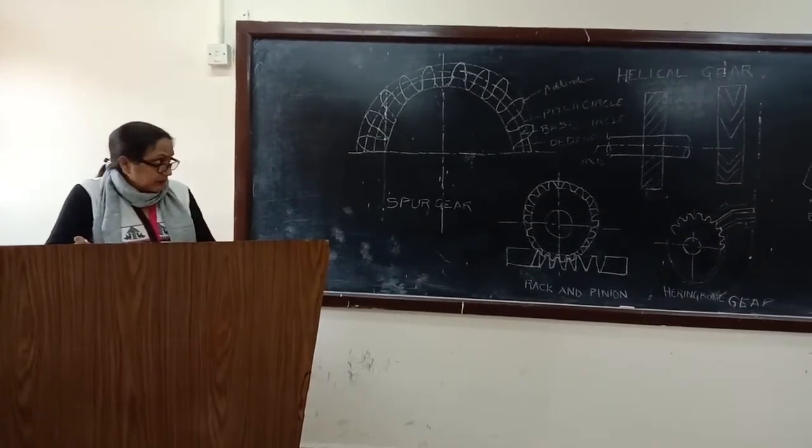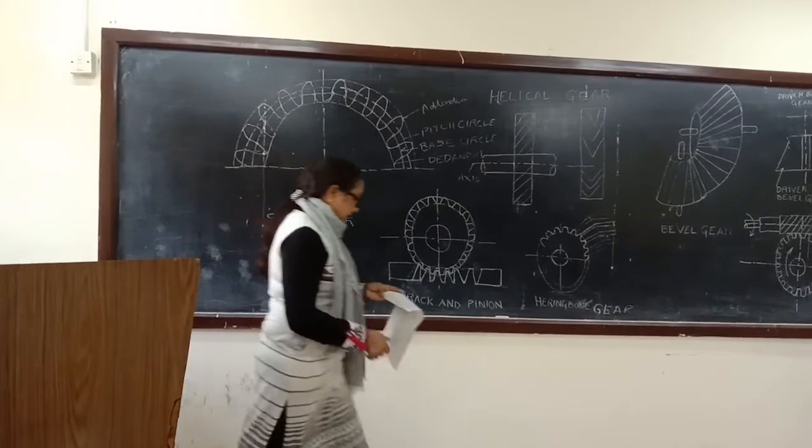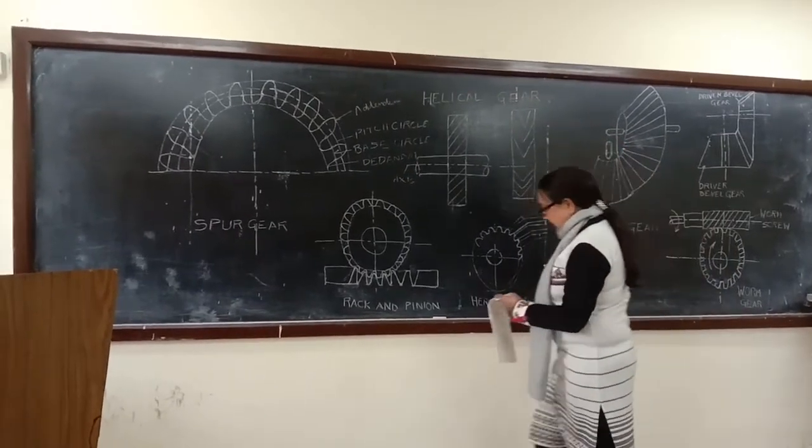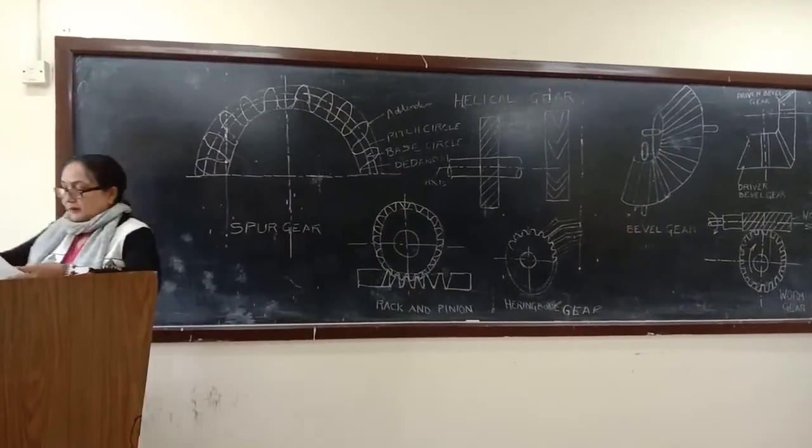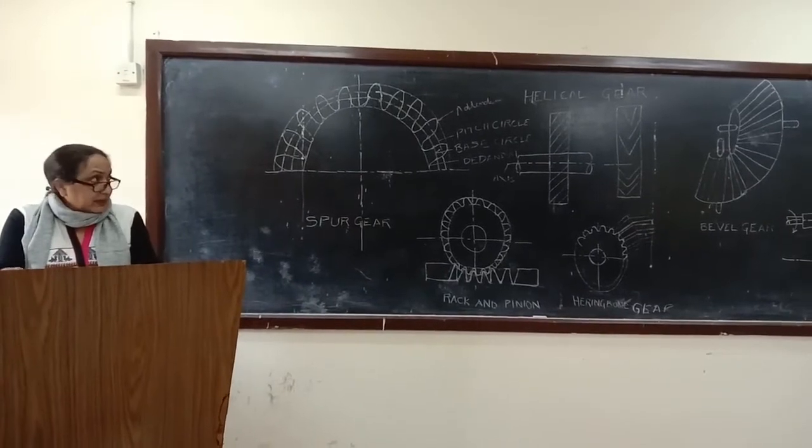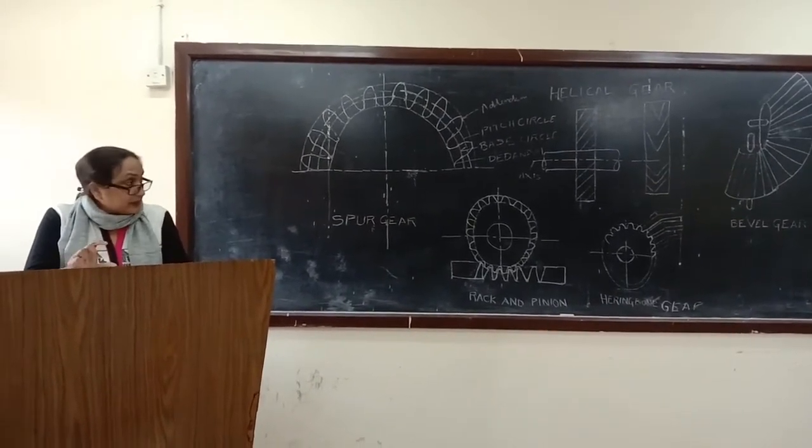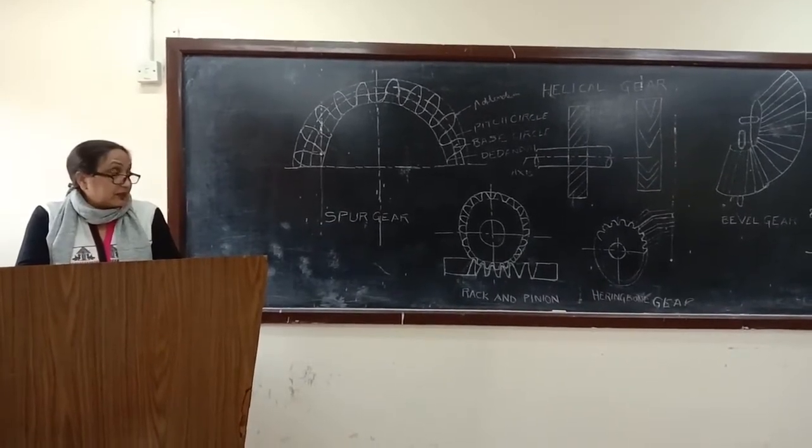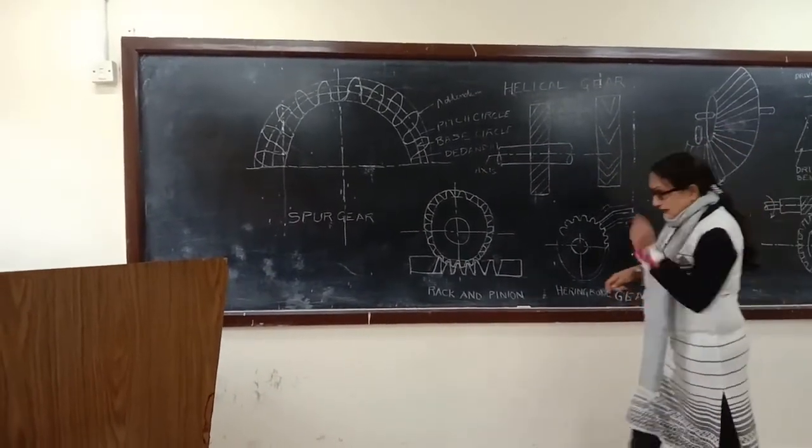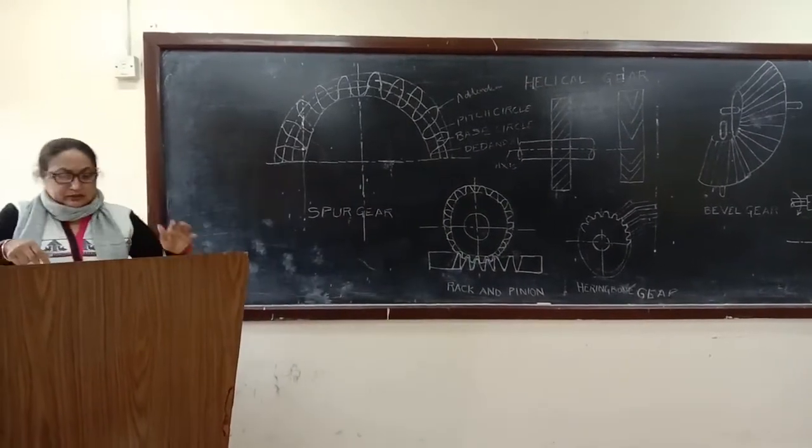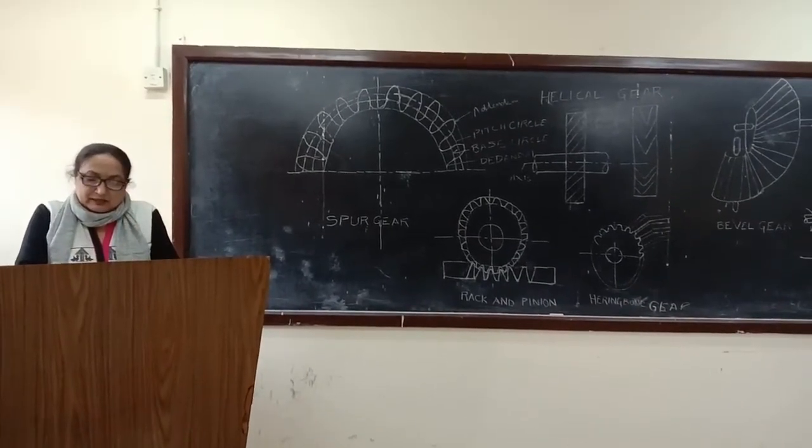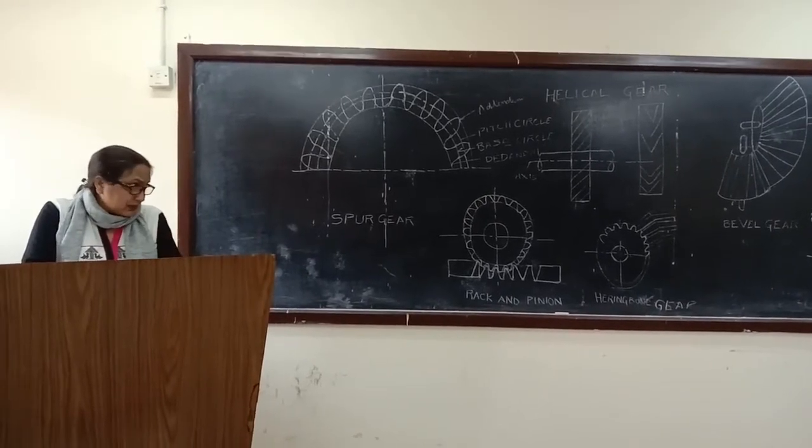Third is bevel gear. Bevel gear transmits power at an angle. Bevel gear transmits power at an angle between intersecting shafts. Has the shape of a truncated cone. Used for power transmission between intersecting shafts. Bevel gear is used in power plants, steel plants, railway track inspection machines, and printing presses.